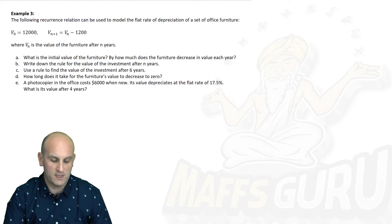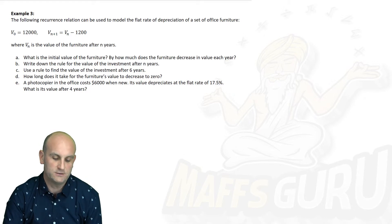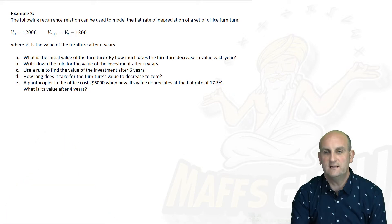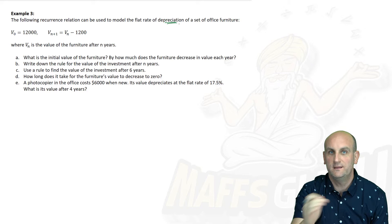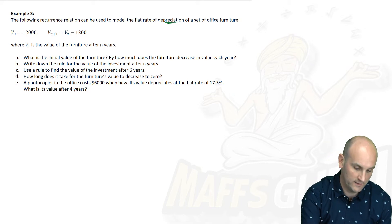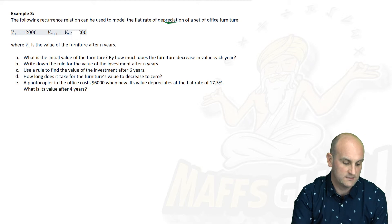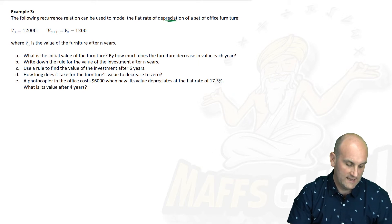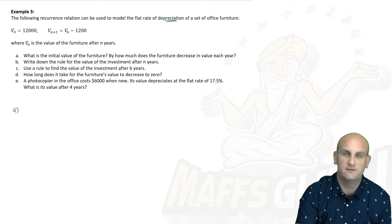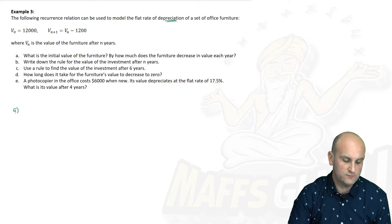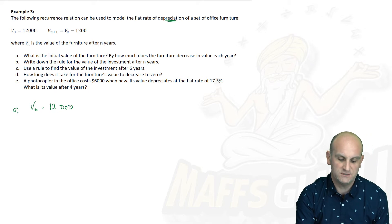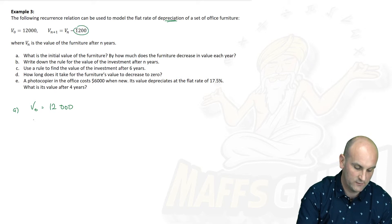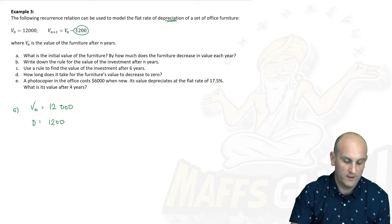Final example — example 3. The following recurrence relation can be used to model the flat rate depreciation of a set of office furniture. The most important word is 'depreciation' — we're going to take away. The formula has a take-away. Where V(N) is the value of the furniture after N years. Part A: what is the initial value of the furniture? That's $12,000. By how much does the furniture decrease in value each year? My D value is $1,200.